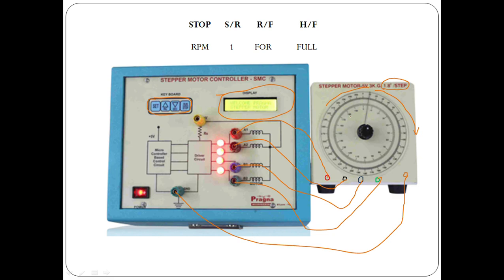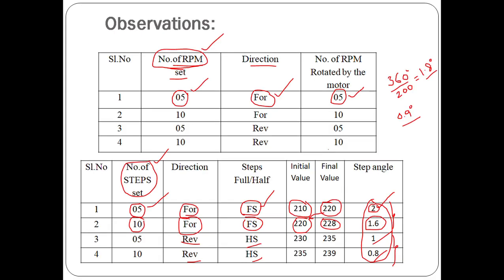You can see various applications of the stepper motor — for example, in printers. When you set the paper size to A4, the number of step rotations is set accordingly so the entire paper comes out. If you set A5, which is smaller than A4, the number of steps rotated will be less. All those commands come from the control circuit. The motor can operate in RPM mode as well as step mode, and in step mode you have half step and full step options.